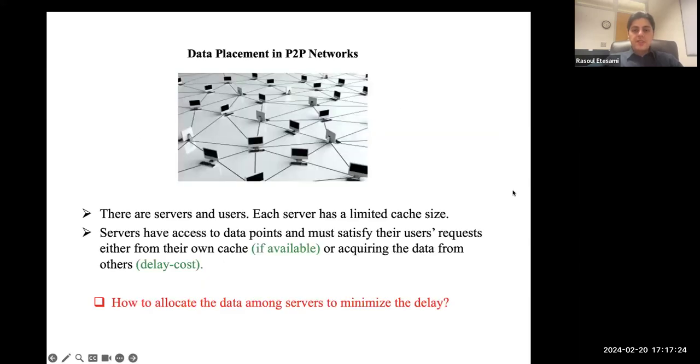In this work, we consider a well-studied data placement problem which has many applications in P2P networks. For example, if you consider a set of servers which can store a limited amount of data, when clients refer to the servers, either the data is available in the cache of that server, which we simply provide without any delay cost, or the server has to travel over the network and get access to that data and deliver to its client, in which case we incur some delay costs.